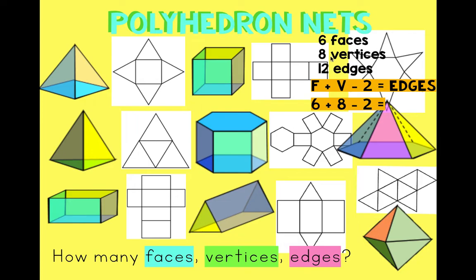That's all you have to do — add your faces and vertices and subtract two; that will give you your edges. You can also look at your drawing and count. Let's try one more: the hexagonal prism. How many faces does it have? We have six on the outside and two on the top and bottom — so there are eight faces.